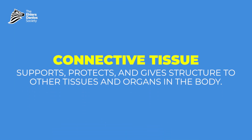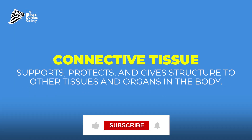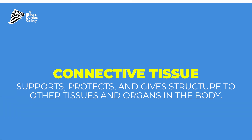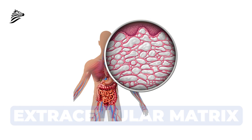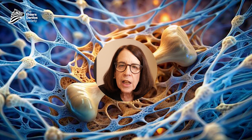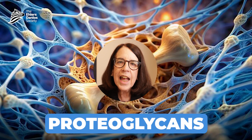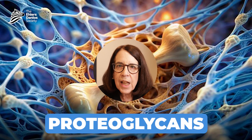So what is connective tissue, anyway? Connective tissue is defined as the tissue that supports, protects, and gives structure to other tissues and organs in the body. There are many different types of connective tissue, but what they have in common is that there are very few cells, and they are mostly composed of what we call the extracellular matrix, which is the material that sits outside those cells.